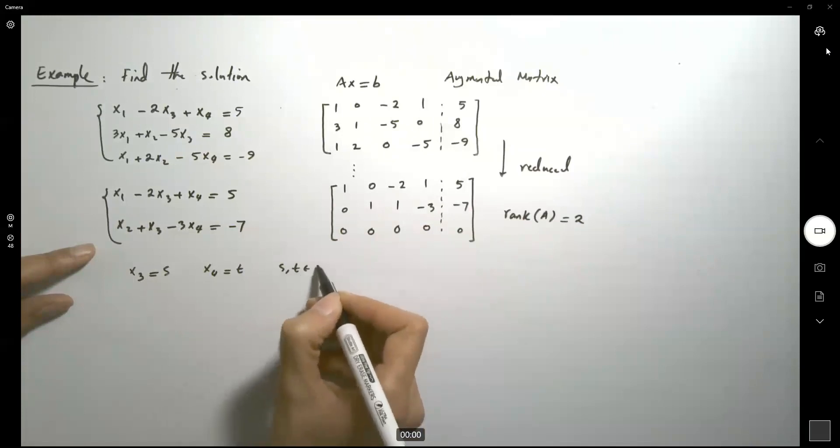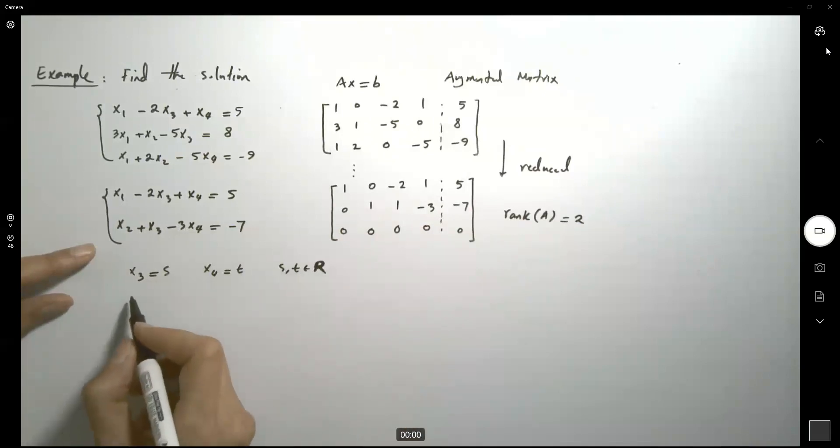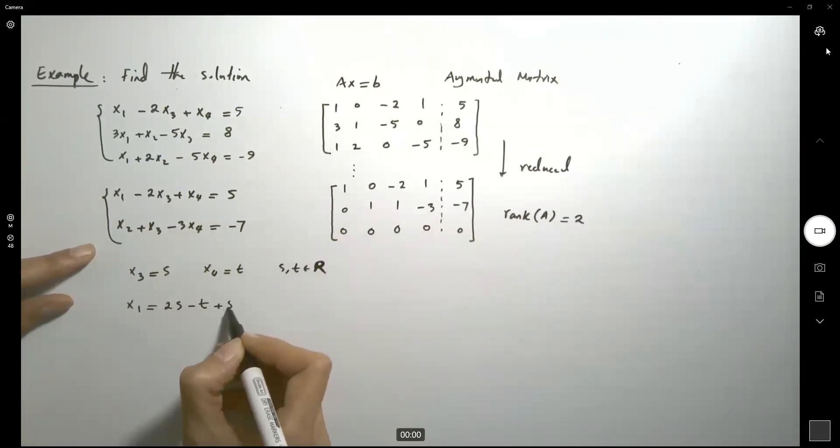We can rewrite this as x1 equals 2s minus t plus 5, and x2 can be written as, here we have, negative s plus 3t minus 7.